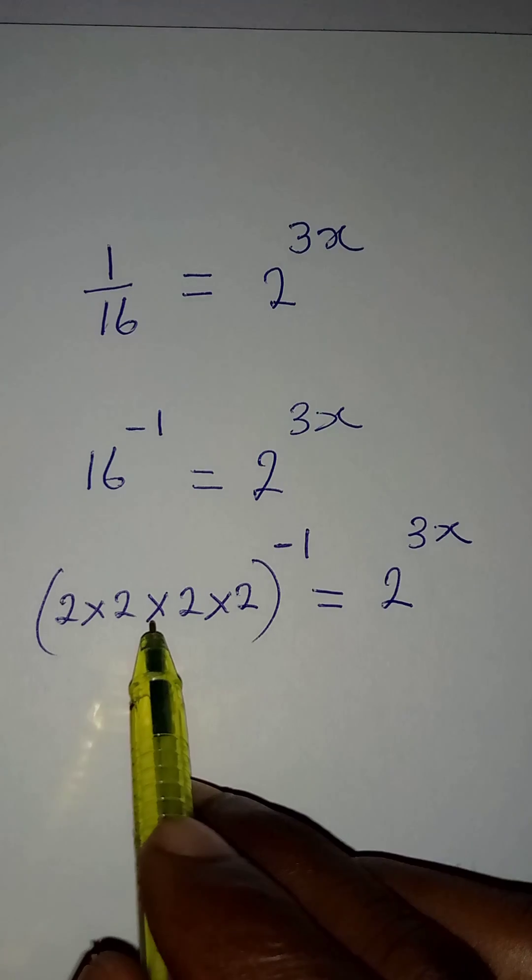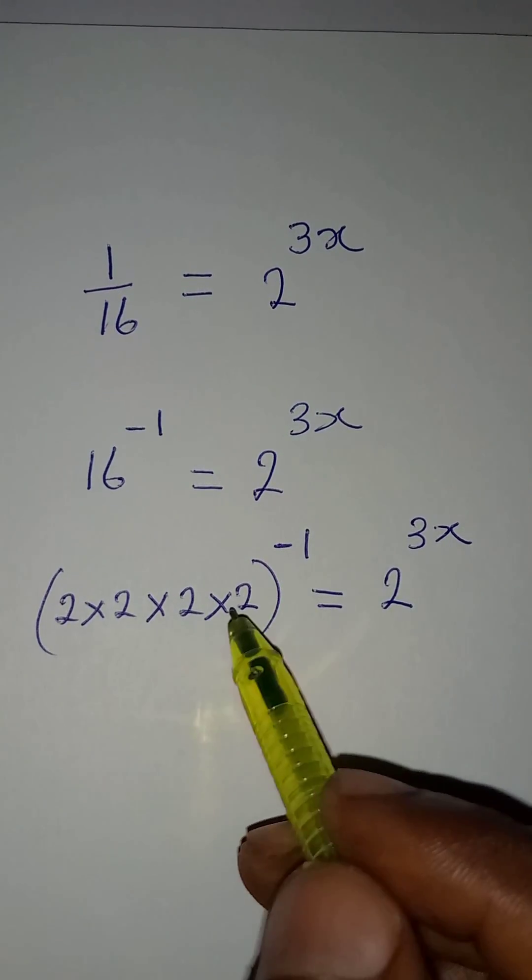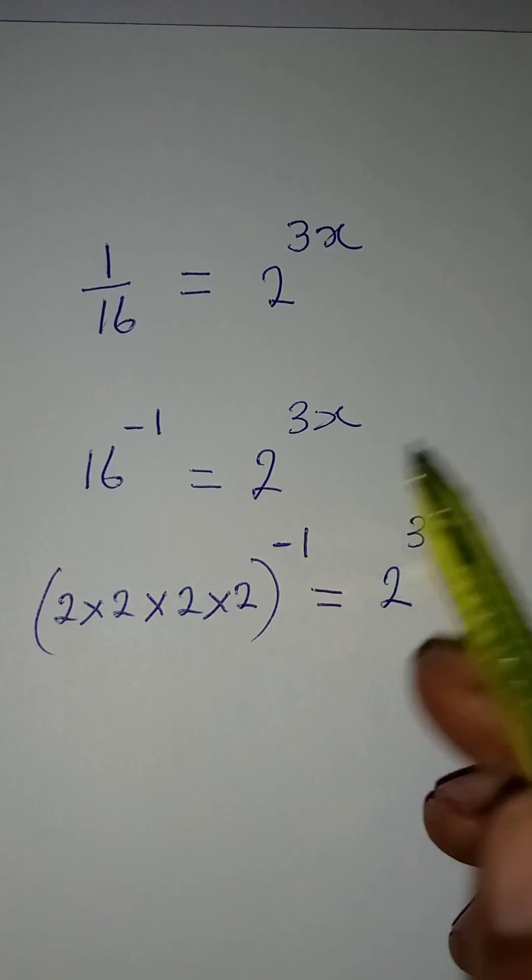Now, we are using 2 here because we have 2 on the right-hand side. If not, 4 times 4 will still give you 16, but we don't have 4 on the right-hand side.